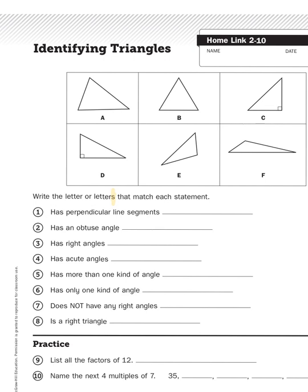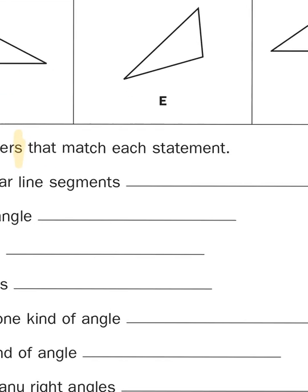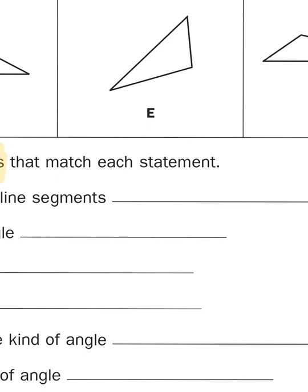So if you look right here, there is a 90 degree angle on triangles C and D because we have that telltale little box in the corner that tells us it's a right angle, which also means this is a right triangle, which also means it has perpendicular line segments. So on that line I would write the letters C and D, and we'll separate them with a comma.